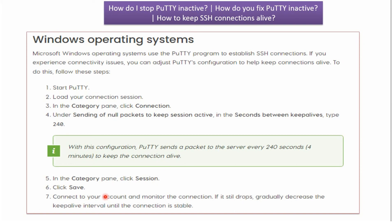In 'Seconds between keep alives' we have given 30 seconds, but you can give 240 also. If you give 240 seconds, PuTTY sends a packet to the server every 240 seconds to keep the connection alive. If you give 30 seconds, PuTTY sends a packet every 30 seconds. Suppose 240 seconds is not working — then you can gradually decrease the keep-alive interval until the connection is stable.